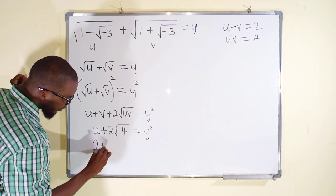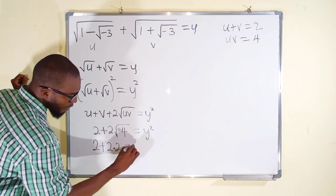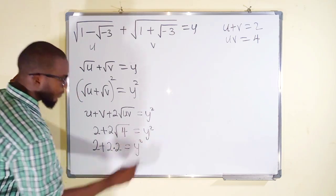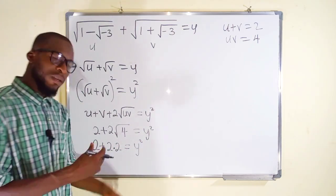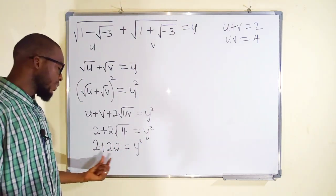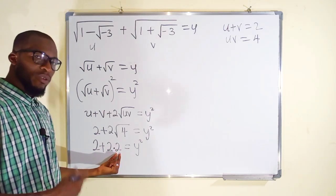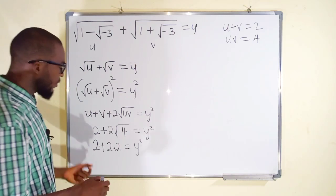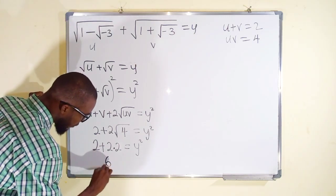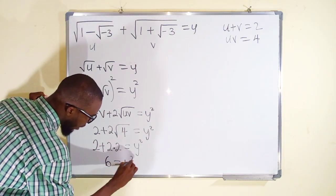So we have 2 plus 2 × 2, and this is equal to y². From BODMAS you know you have to start multiplying before adding, so we have 2 × 2 which is 4, and 4 + 2 is equal to 6. So we have 6 = y².